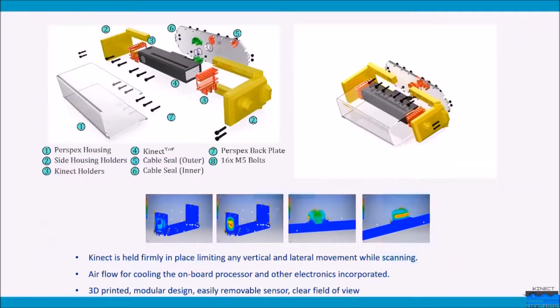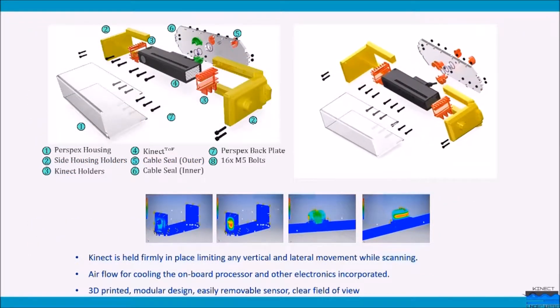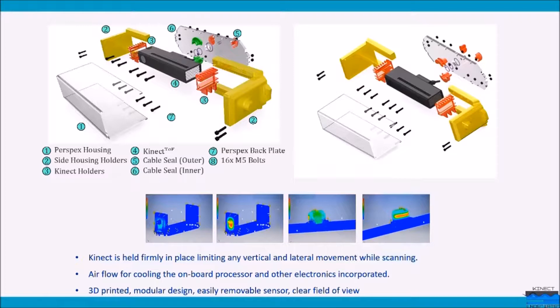The first part is the design of a custom-built waterproof housing for the Kinect sensor. The housing has been developed using transparent perspex held in place by custom-designed 3D printed parts. Underwater structural integrity was verified using stress analysis to withstand pressures of up to 15 feet below water.